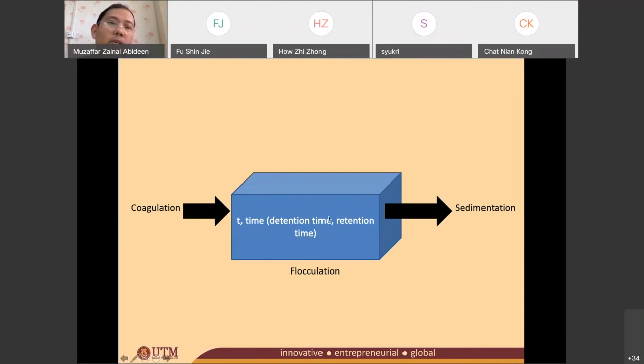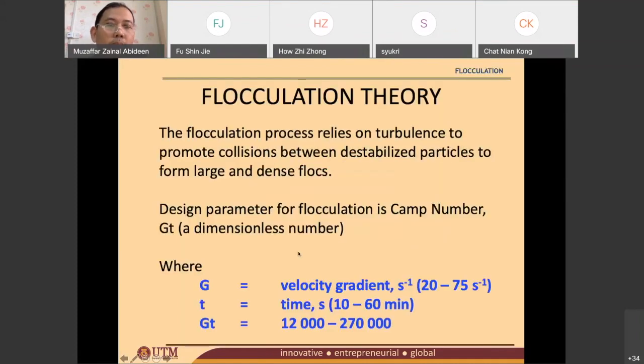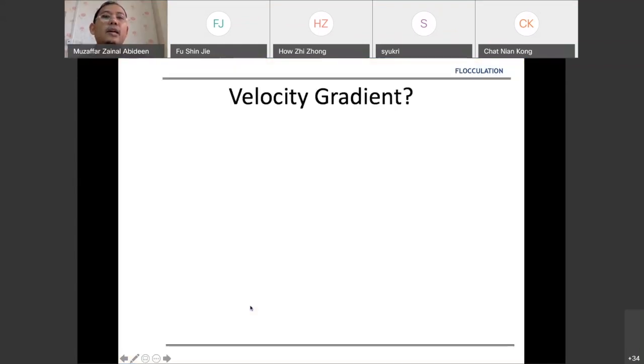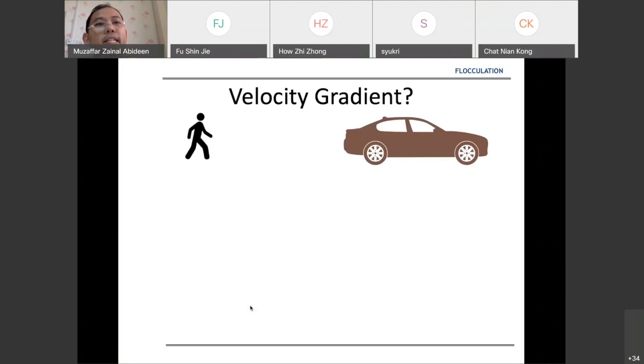Does anyone know what velocity gradient means? I'd like to make an analogy. Imagine this is a lecturer driving a car going for a lecture. They are driving the car with the speed of let's say 60 kilometers per hour, which is 16.7 meters per second.